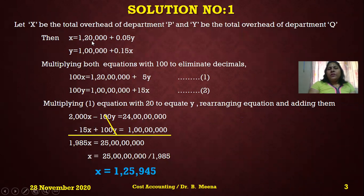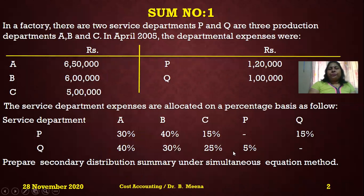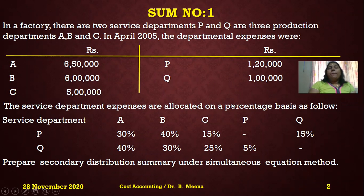So the first equation is: x = 1,20,000 + 0.05y. For the second equation, y equals Q's overhead of 1 lakh plus 0.15x, because P's percentage against Q is 15%. So the second equation is: y = 1,00,000 + 0.15x.